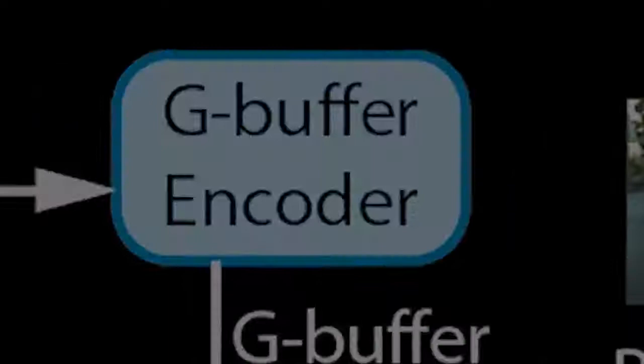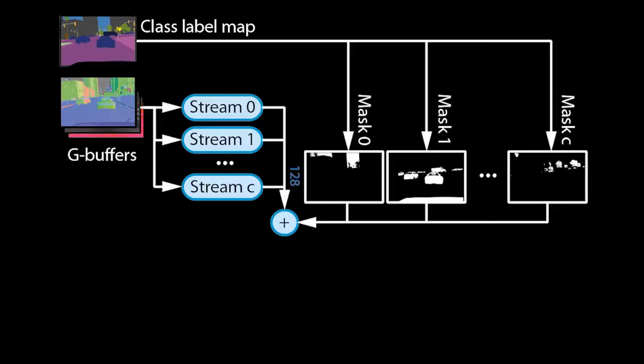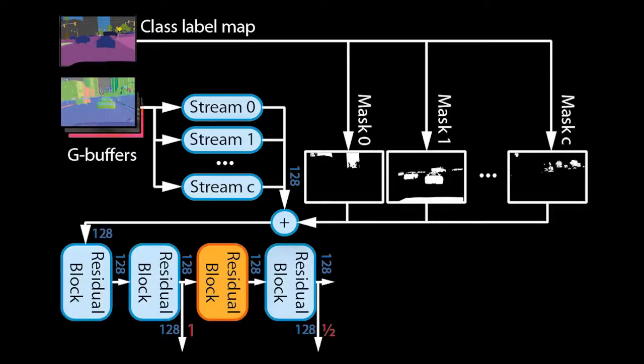Let us now zoom in on the G-buffer encoder. From the G-buffers, we can derive a semantic class label map, which assigns an object ID to every pixel. We pass the G-buffers through multiple convolutional network streams and fuse the streams again based on the object IDs. This allows the encoder to learn different ways of processing for each type of object — for example, trees will be treated differently from cars. The resulting feature tensors are further processed by residual blocks, which output tensors at multiple scales.